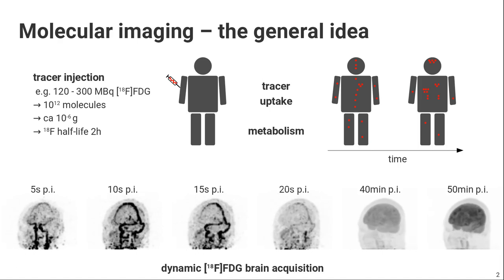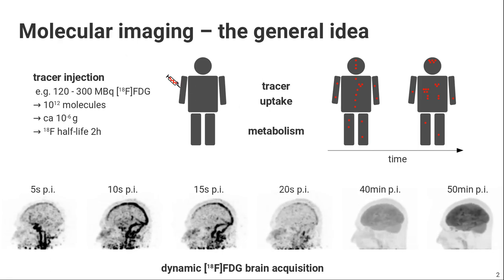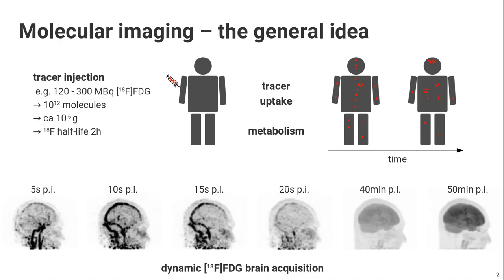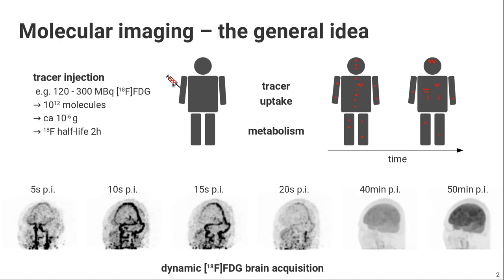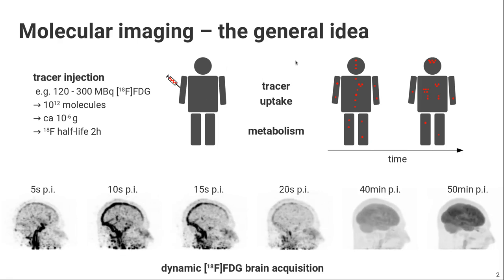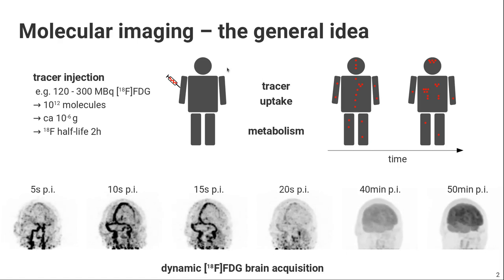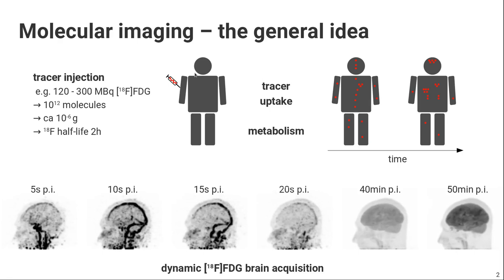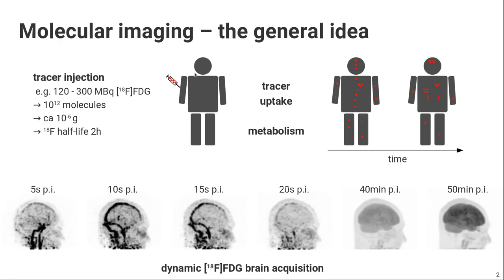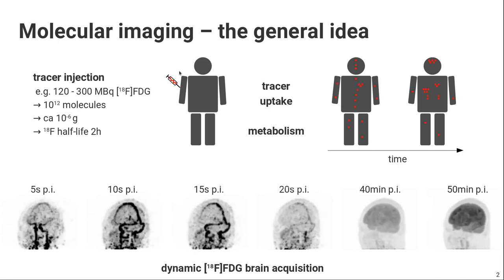Inside the human body. Looking at the picture here on the top right, our aim is to apply or inject a molecule of interest. For example, if we're interested in glucose metabolism, we'd inject glucose into the human body. Glucose is then distributed via the bloodstream to different organs and metabolized. One way to visualize this process is to label our molecule of interest.